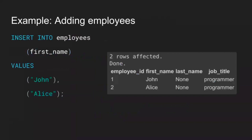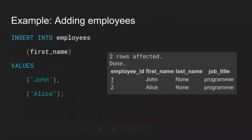In this INSERT example, we add two employees — John and Elise. Even if there's only one column you're inserting into, you still specify it, otherwise you may get an error. Looking at the output, the employee_id starts counting from 1. Since no last name was specified for these employees, it shows as None, and since job_title was also not specified, it falls back to the default value of 'Programmer'.